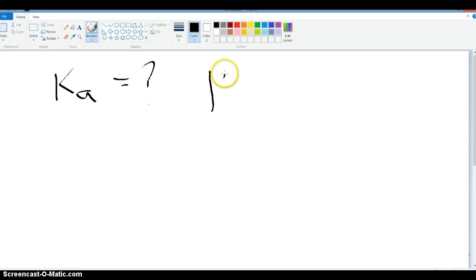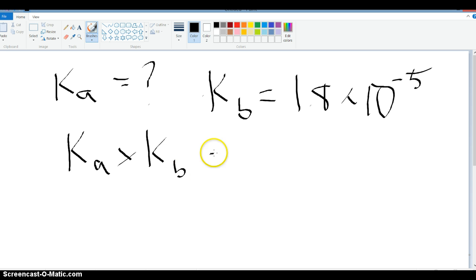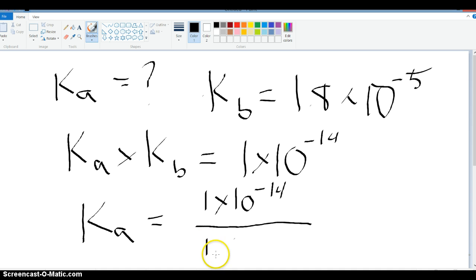You know that Ka is what you don't know. You know Kb is equal to 1.8 times 10 to the negative 5. But now we know that Ka times Kb equals 1 times 10 to the negative 14th. So Ka for that NH4 must equal 1 times 10 to the negative 14th divided by 1.8 times 10 to the negative 5th.